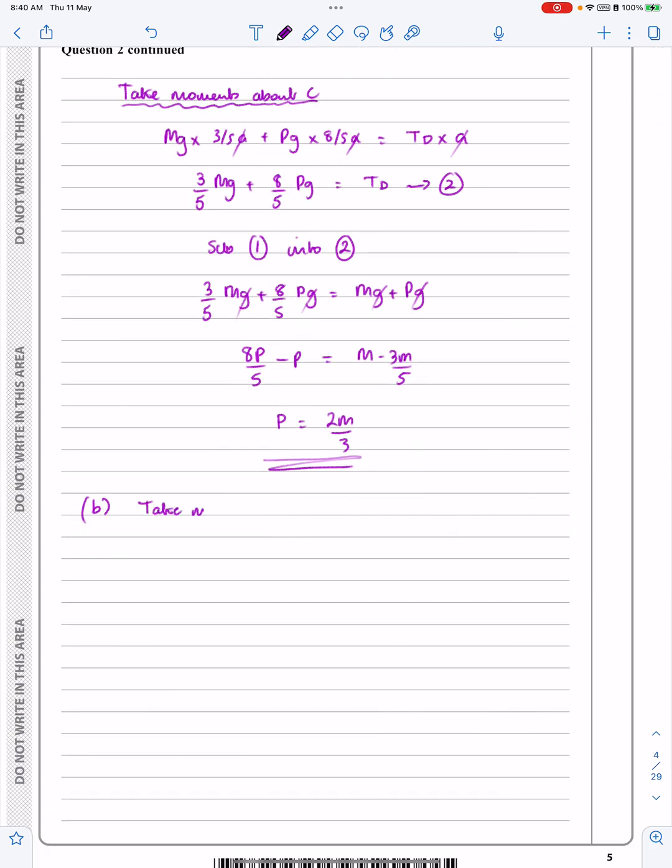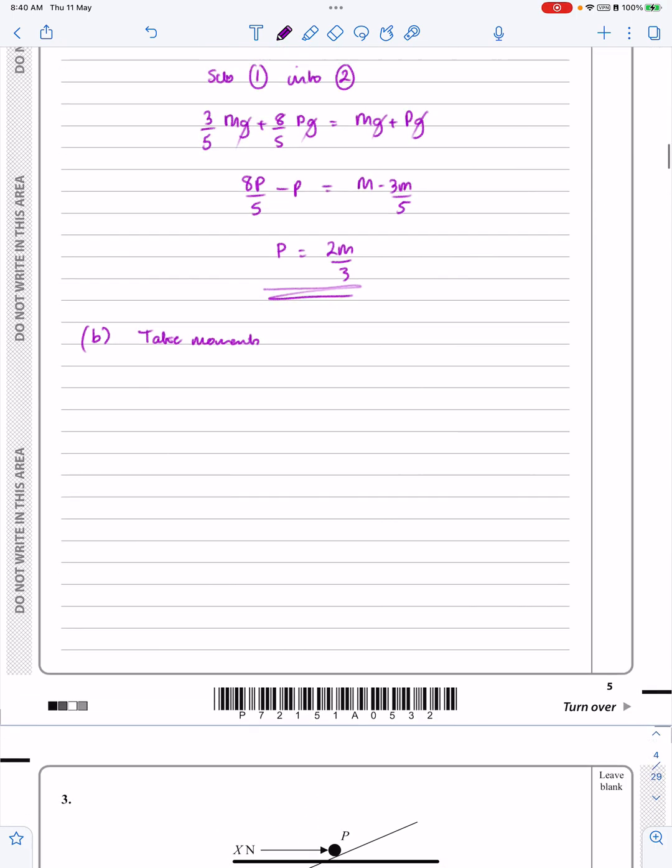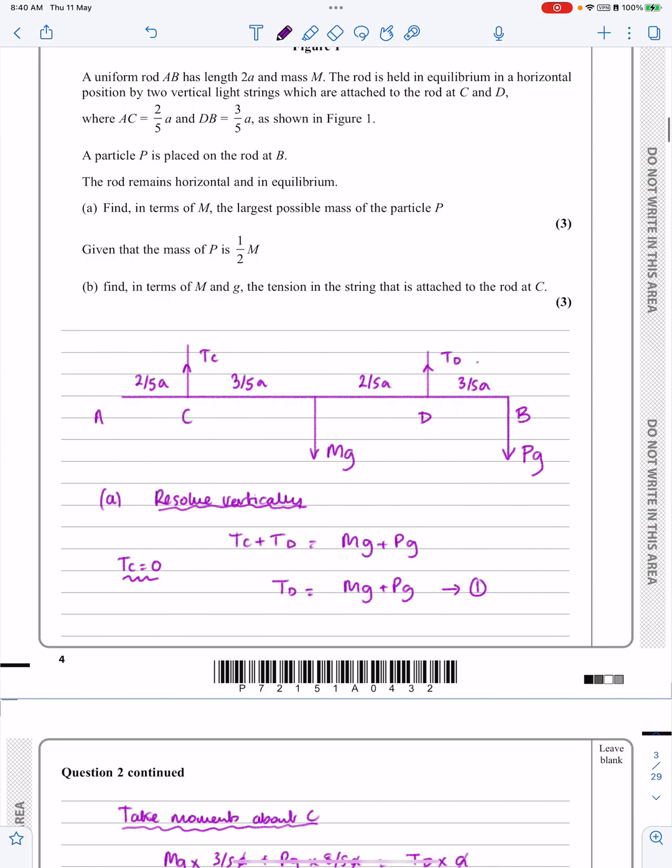Okay, so if I'm going to find that one, I'm going to take moments again. And this time, because I want to find Tc, if I take moments about D, then Td disappears as one of my variables and everything should work out. So if I take moments here about D, when I do that, I'm going to get Tc times A, plus Mg over 2 times 3A over 5 is equal to Mg times 2A over 5. Go back at the diagram, just have a look at what I'm saying there, if I'm taking moments about D here.